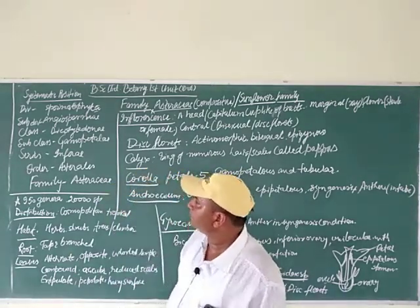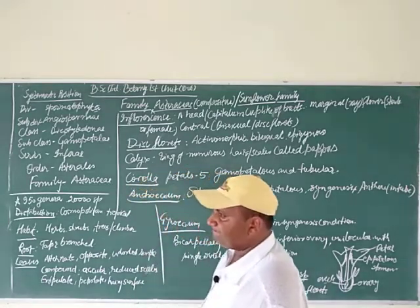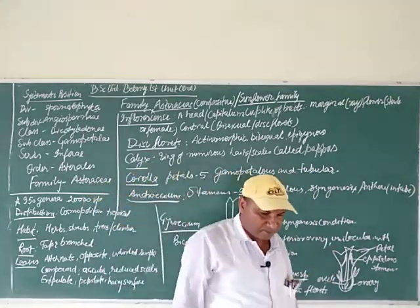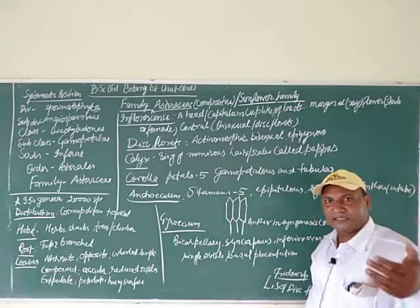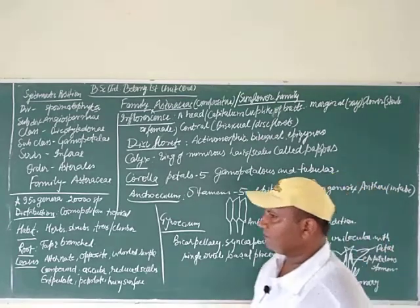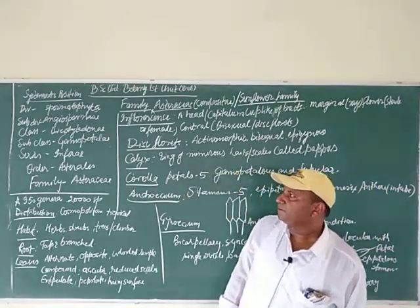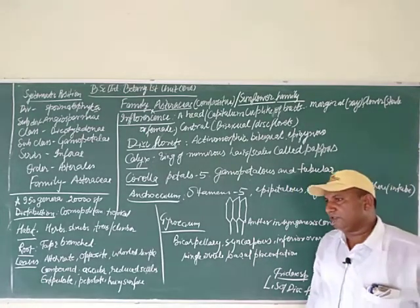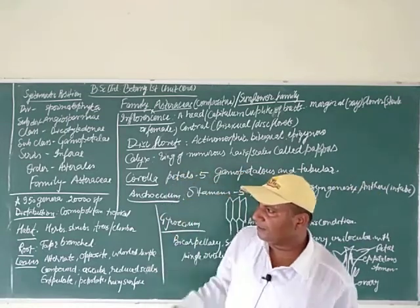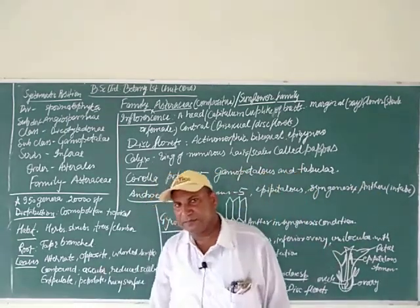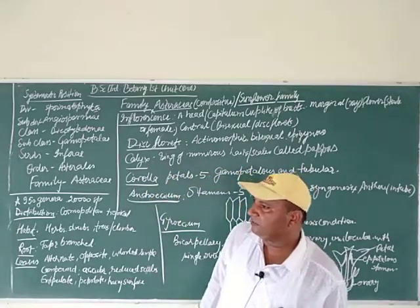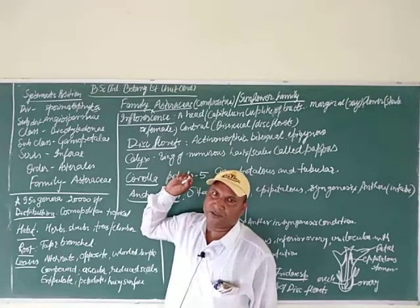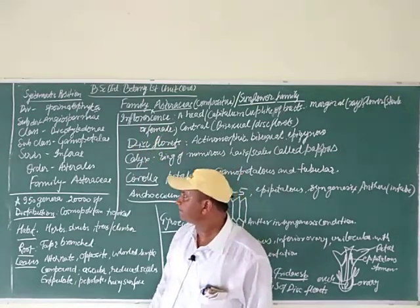The third point is class. This family belongs to the Dicotyledons. According to Bentham and Hooker's classification, the class is divided into three parts: Dicotyledonae, Gymnospermae, and Monocotyledons. Here we are studying Dicotyledonae, so the class is Dicotyledonae.